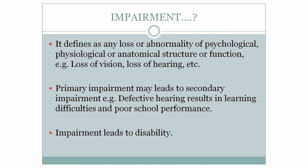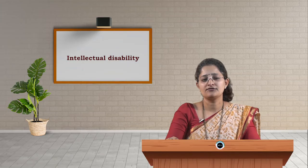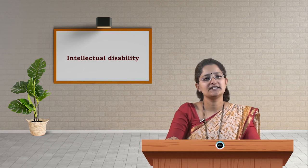Primary impairment may lead to secondary impairment. For example, defective hearing results in learning difficulty or poor school performance. Therefore, impairment leads to disability.